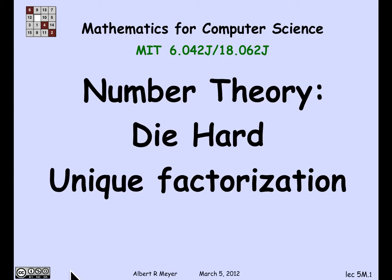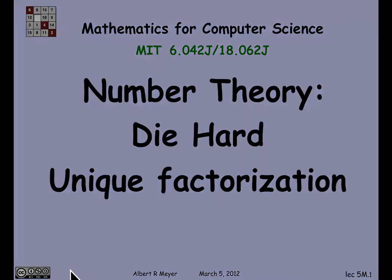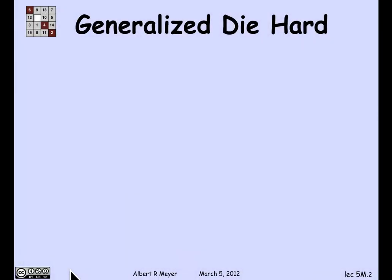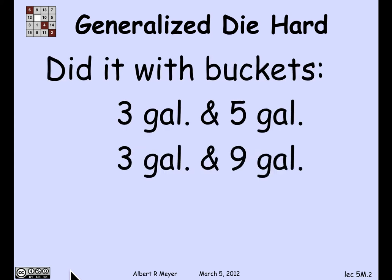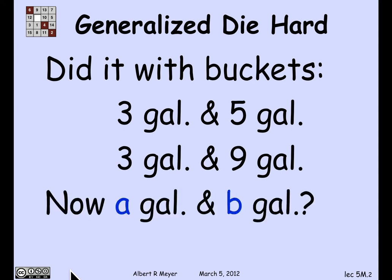We're ready to put together the facts that the GCD is a linear combination to prove two cool results — one fun and the other important and serious. Let's begin with the Die Hard example. We looked at the Die Hard state machine and figured out its behavior with jugs of size 3 and 5 gallons, and also with jugs of size 3 and 6 gallons. Let's look at the general case now.